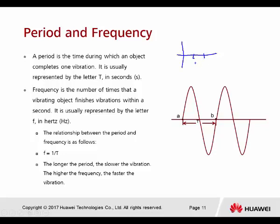For example: if a radio wave takes 1 full second to complete one vibration, it has a low frequency. But if it completes one vibration in half a second, it can do two vibrations per second — this is called high frequency. So the faster the vibration is completed within a second, the higher the frequency.